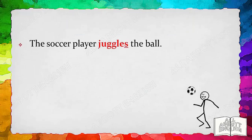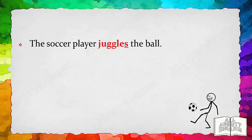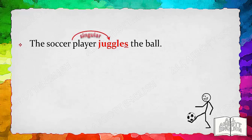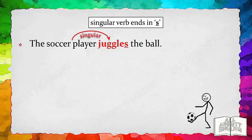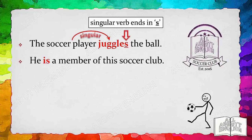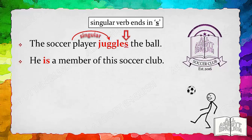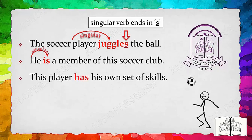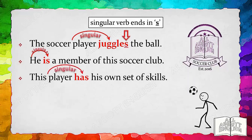Let's start with some example sentences. 'The soccer player juggles the ball.' The soccer player is a singular subject, so it takes the singular verb 'juggles.' Notice that the singular verb 'juggles' ends in S. 'He is a member of the soccer club.' 'He' is a singular pronoun used to replace the subject to avoid repetition; the singular subject 'he' requires the singular verb 'is.' Similarly, 'this player' is a singular subject requiring the singular verb 'has.' 'This player has his own set of skills.'